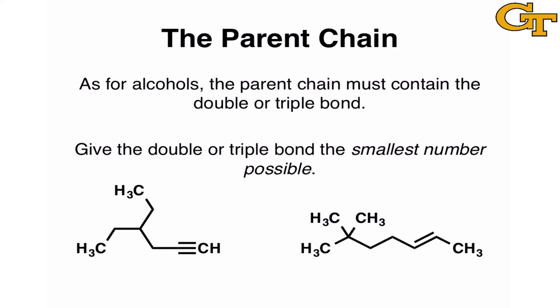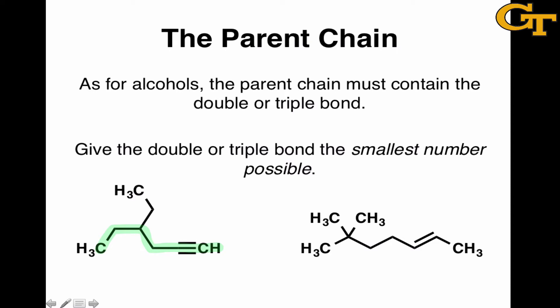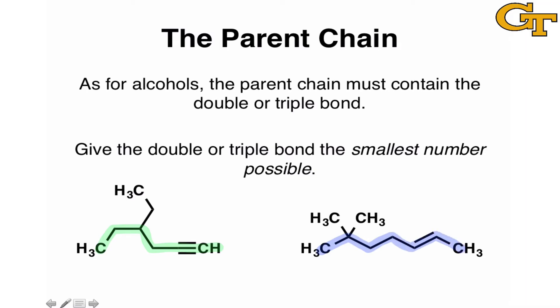As we saw for alcohols previously, the parent chain, when looking at an alkene or an alkyne, needs to include the double or triple bond. In the examples you see here, the parent chain needs to go through the triple bond. You'll notice that both chains off the branch point are two carbons long, so we could have gone either way, but what I've highlighted in green is one possibility for the parent chain. In the other compound, the parent chain once again needs to pass through the double bond. In these examples, it's relatively straightforward — it's what you would have chosen as the parent chain anyway.